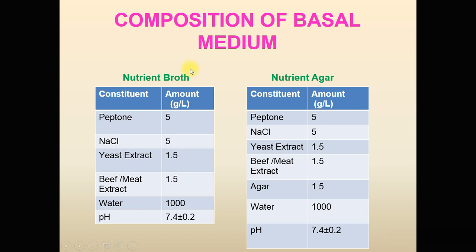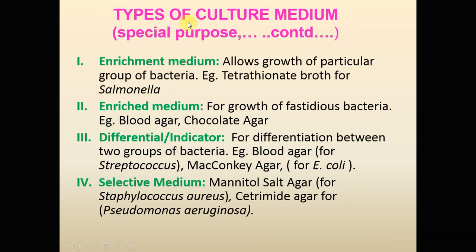The composition of the basal medium: nutrient broth contains peptone (5 g/L), NaCl (5 g/L), yeast extract (1.5 g/L), and beef or meat extract (1.5 g/L), with distilled water at pH 7.4. Sometimes only the meat extract or only the yeast extract is used. Nutrient agar has the same composition as nutrient broth with the addition of agar powder at 1.5 g/L (up to 2%).